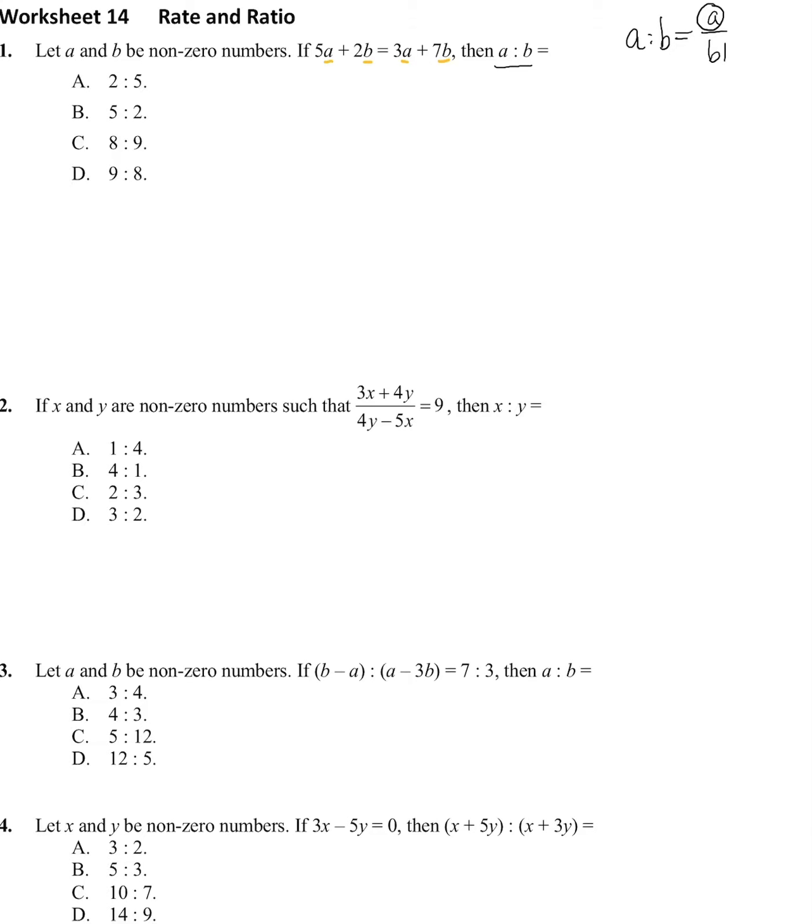So let's look at the first question. Let b equal 1. Now 5a plus 2, because it's 2 times 1, equals 3a plus 7. I group the terms together: 5a minus 3a is 2a, and 7 minus 2 to the other side is 5, and a is therefore 5 over 2. Now we want a over b, and a is 5 over 2 and b is what we assigned as 1, and the answer is simply 5 over 2. So the answer is A.